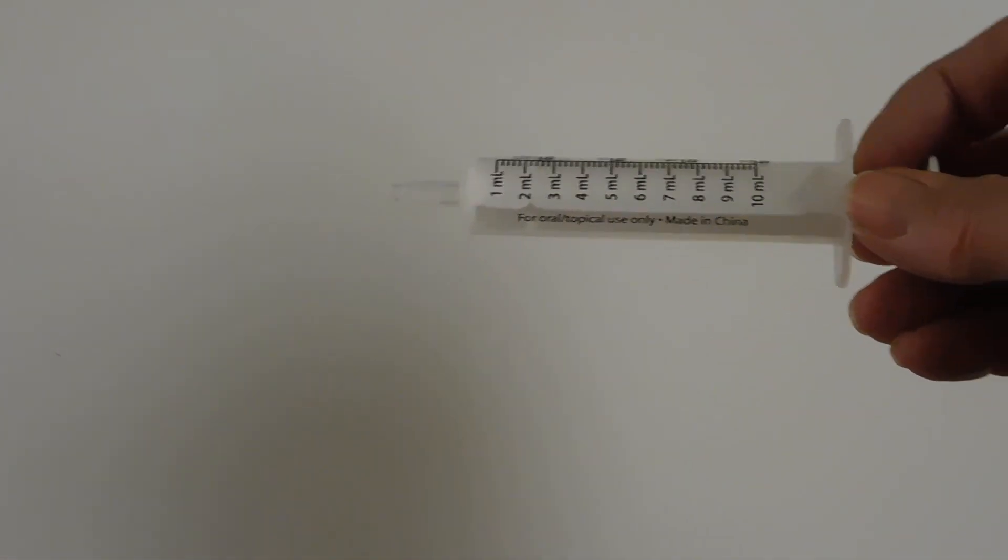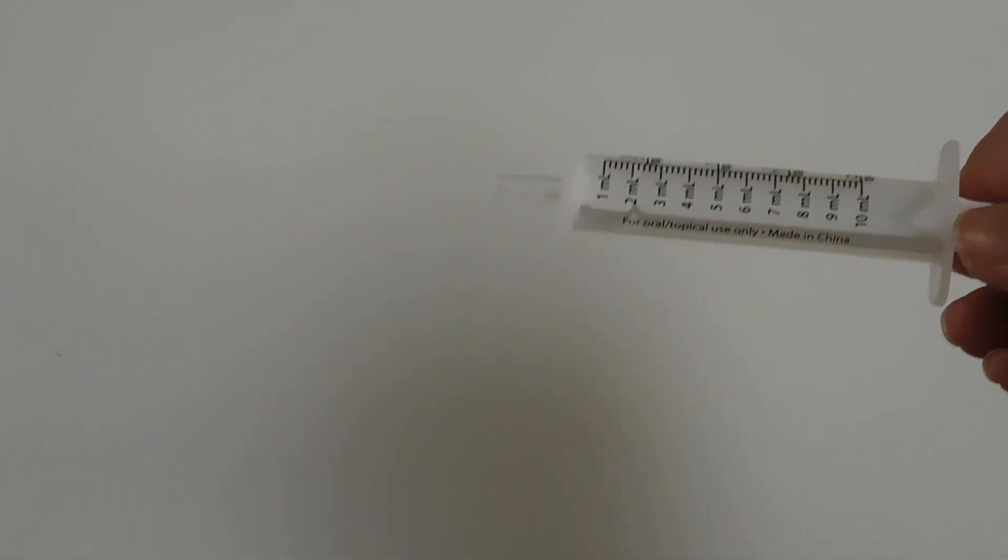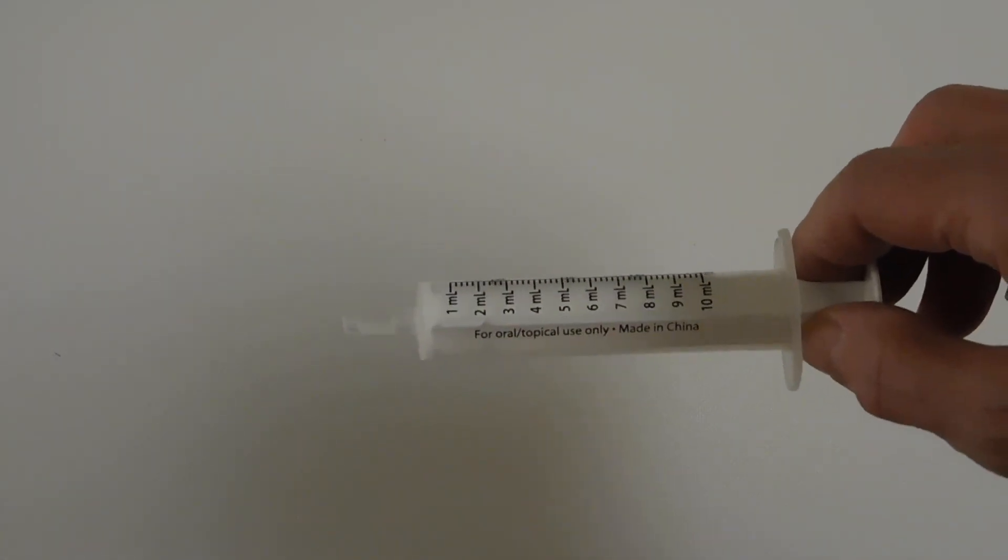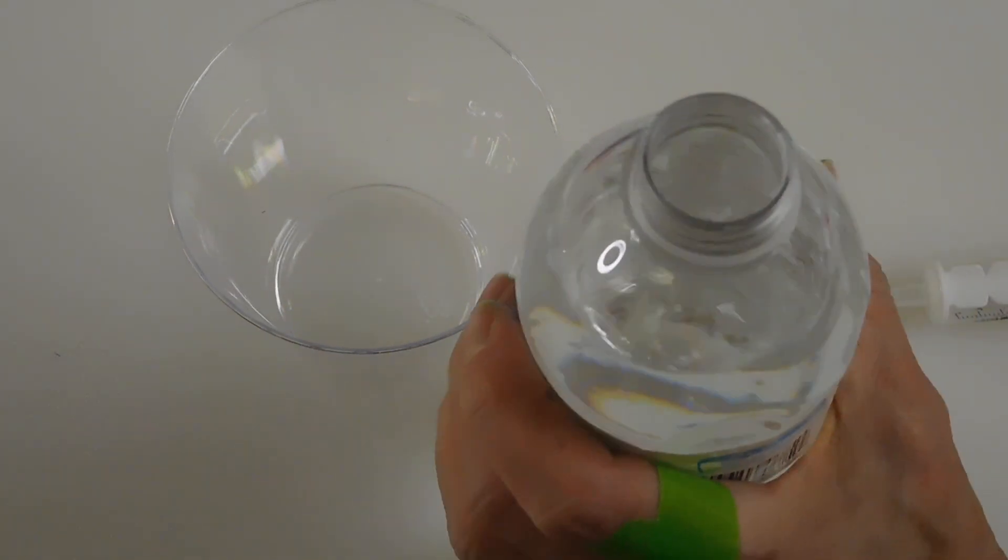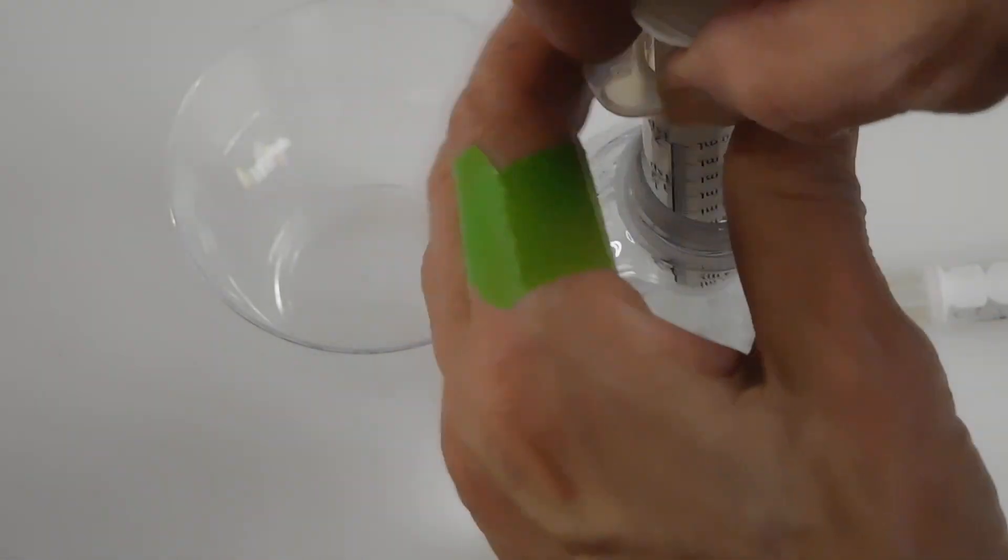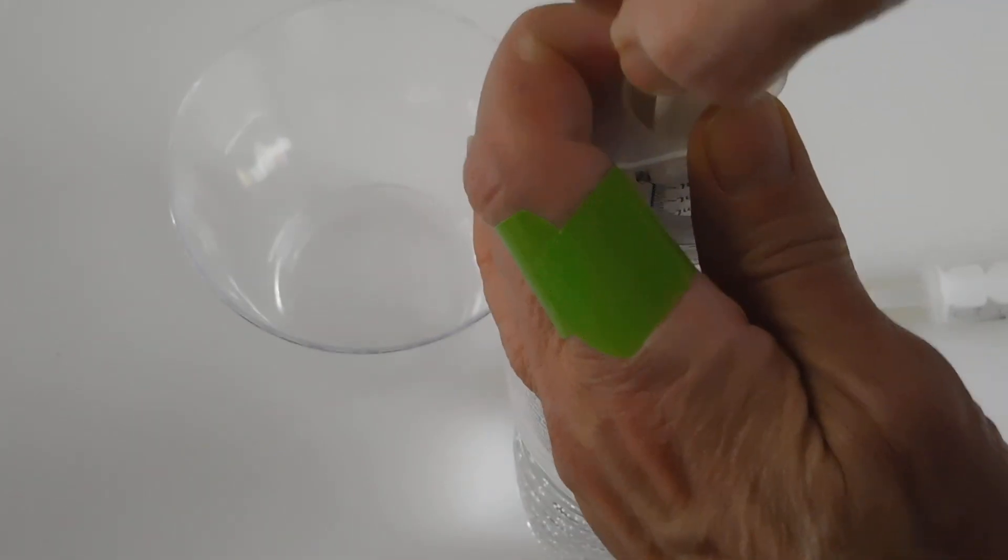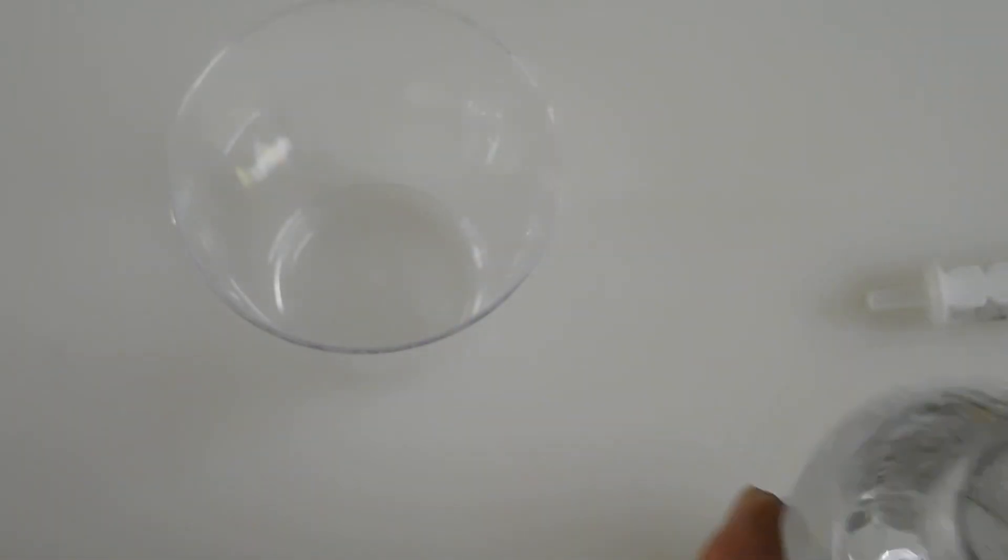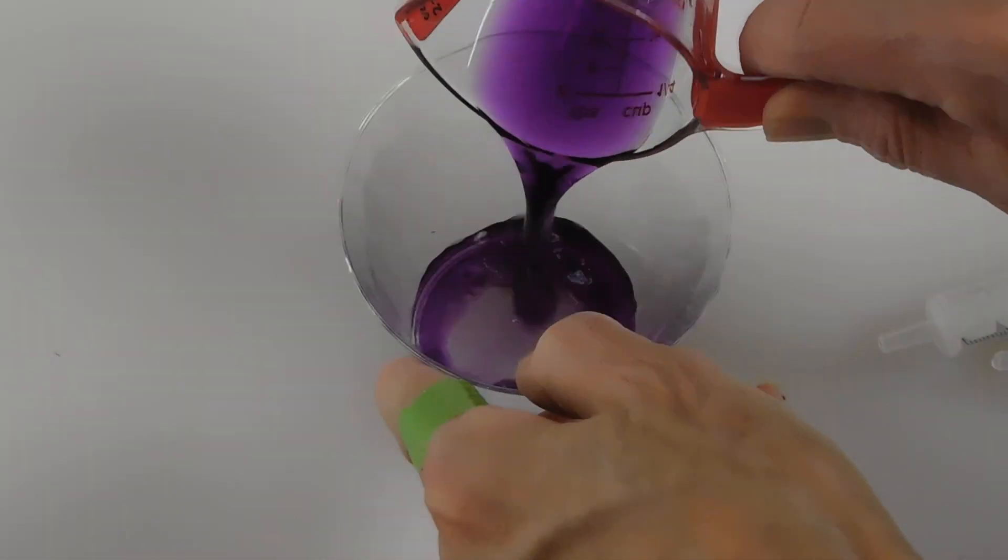When you're using these, you're going to want to rinse it out with distilled water, or use a different one for the next substance that you test. So I'm going to use this one, the baking soda water. So I'm going to just put that in there. Grab some baking soda water. Pour that in.